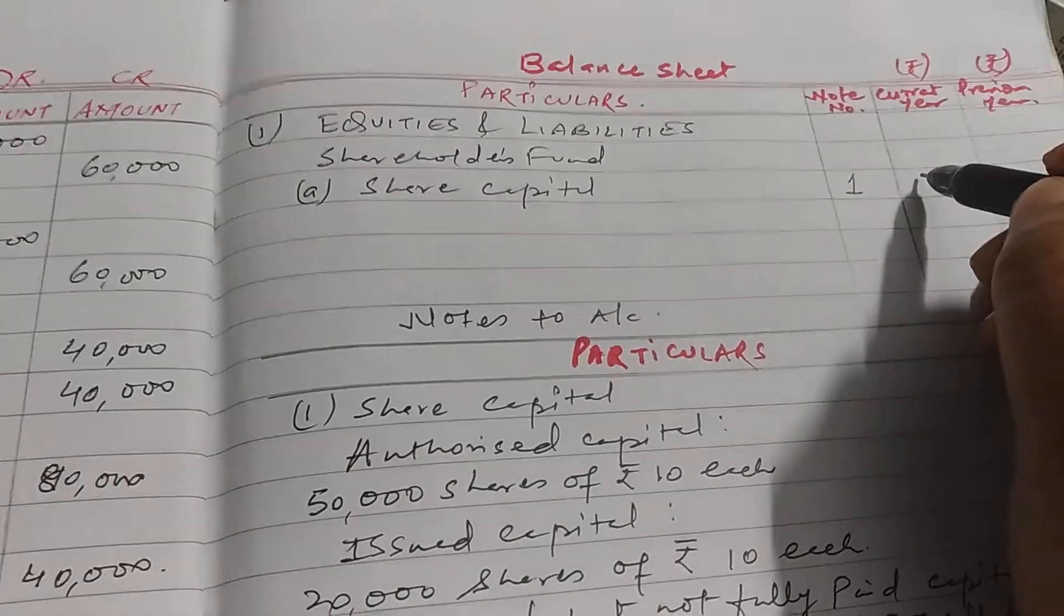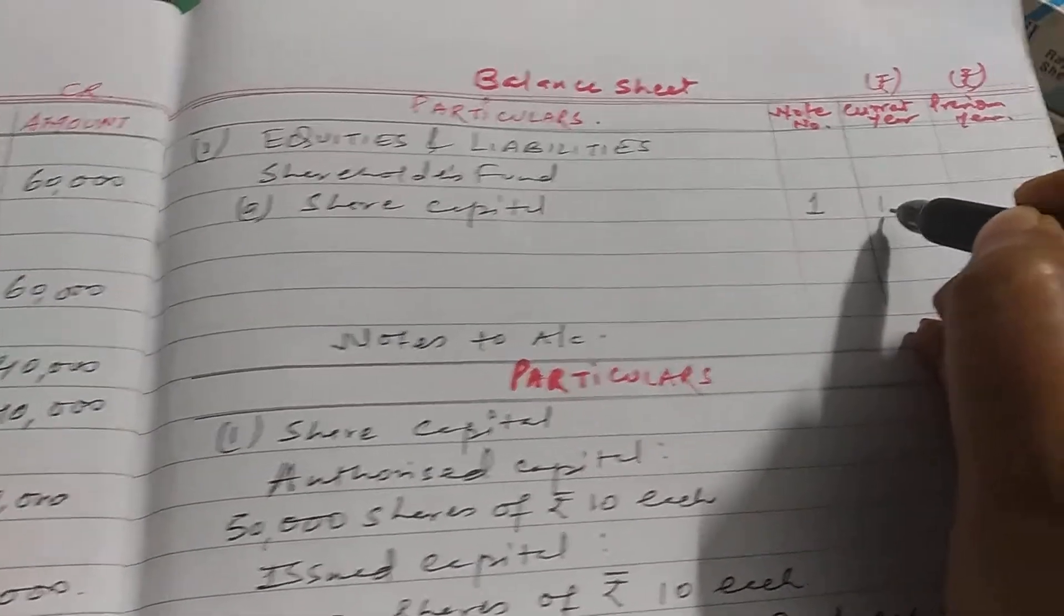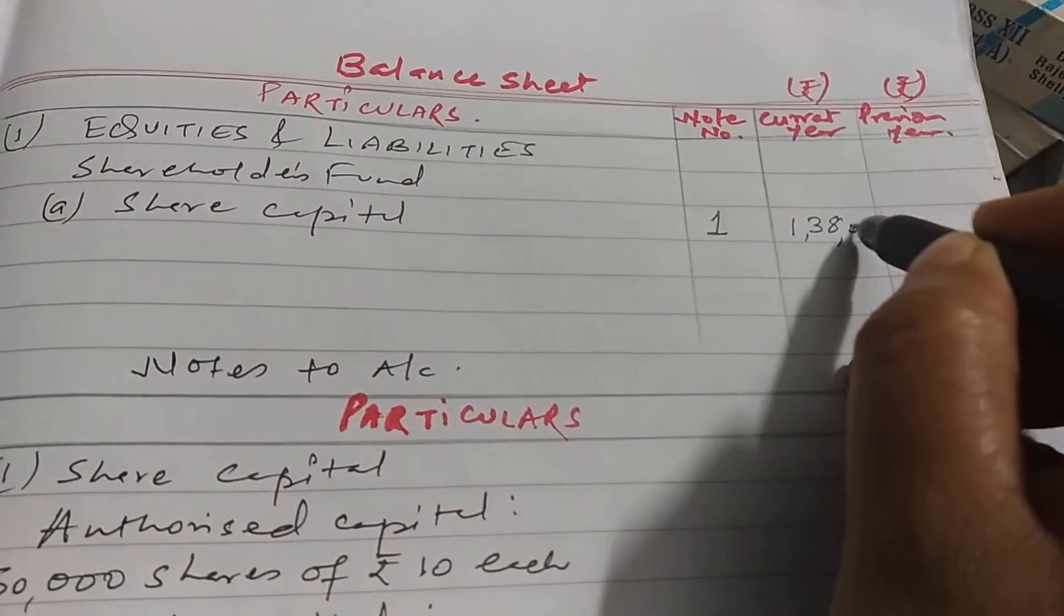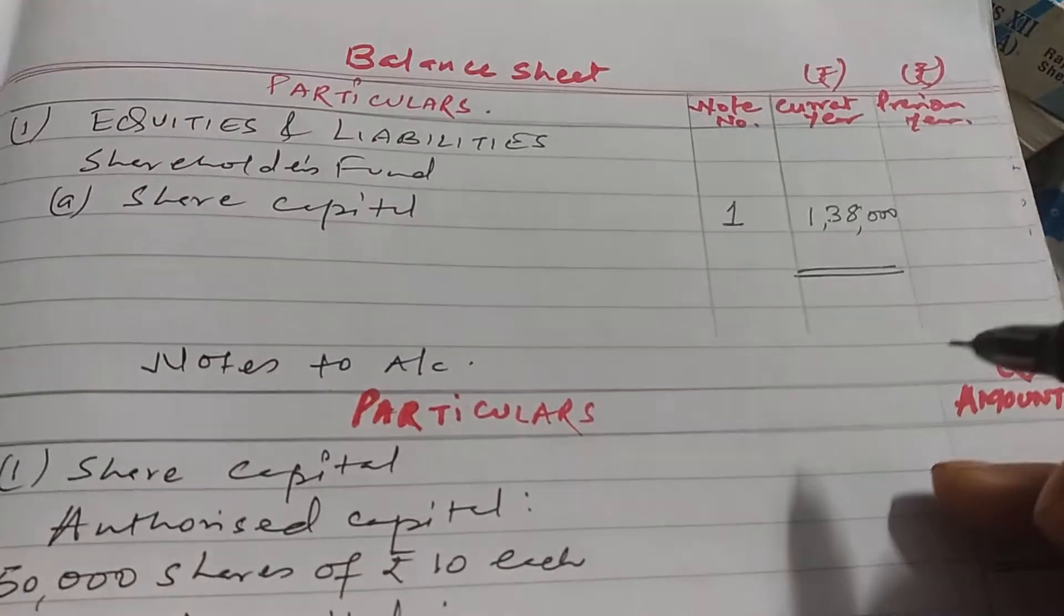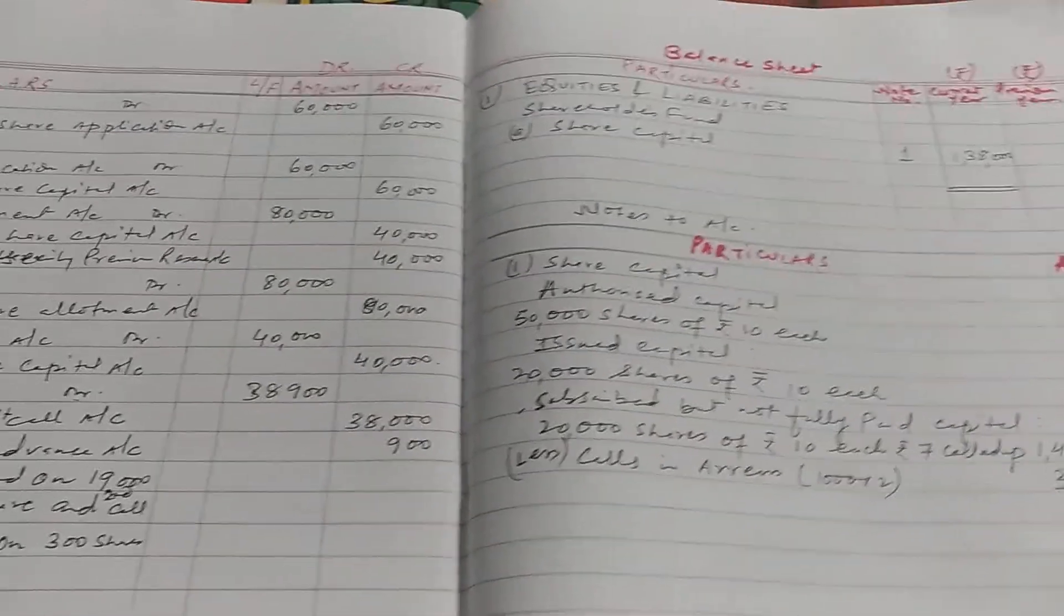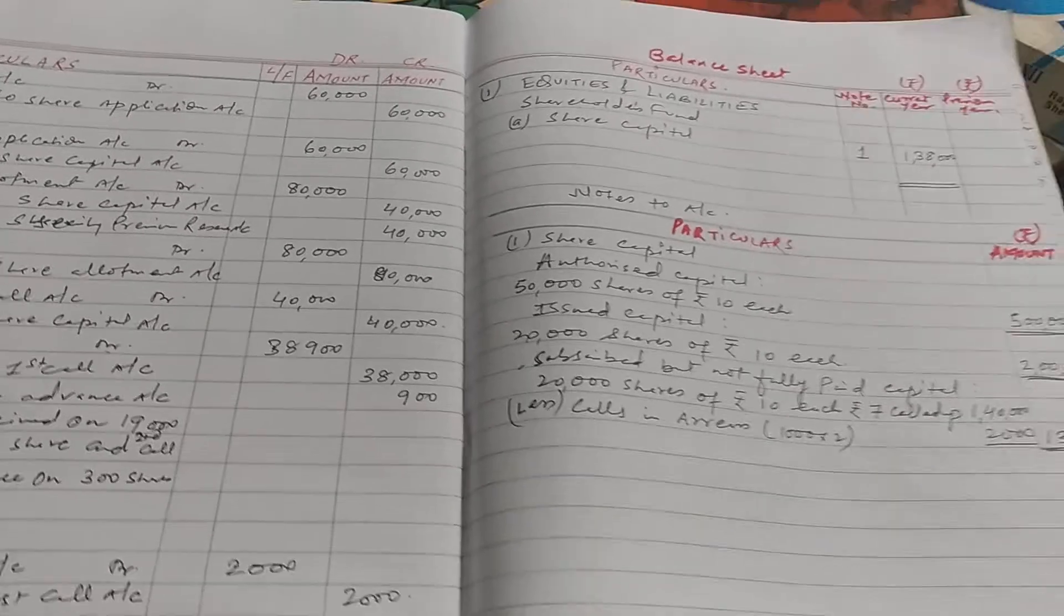Amount is how much? One lakh thirty-eight thousand. So this is the complete sum related to calls in arrears and calls in advance.